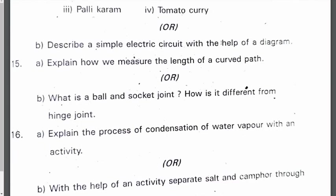Describe a simple electric circuit with the help of a diagram — you can draw a diagram. Explain how we measure the length of a curved path. What is a ball and socket joint? How is it different from a hinge joint? Ball and socket joint is present on the shoulders. With a ball and socket joint we can move 360 degrees, whereas with a hinge joint we cannot move like that.